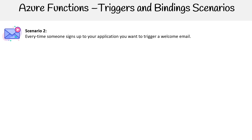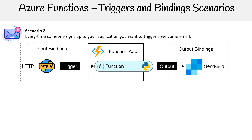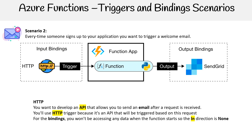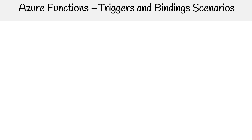In scenario two, every time someone signs up to your application, you want to trigger an email. There is an HTTP request coming in, and it's going to send out to SendGrid to send that email. You'll develop an API that allows you to send an email after a request is received. It'll be triggered because it's an API triggered based on that request. For the bindings, you won't be accessing any data in the in-direction, so that's none, and you'll use SendGrid for the out direction, which allows you to send messages via email.